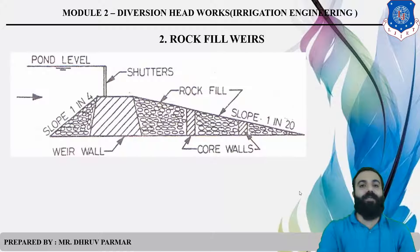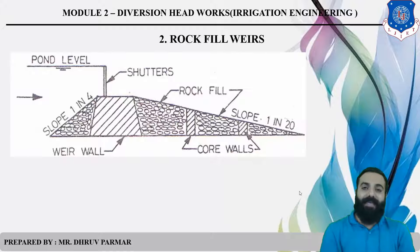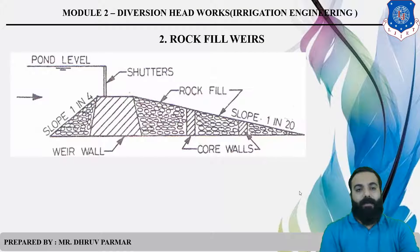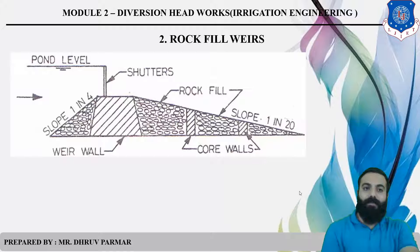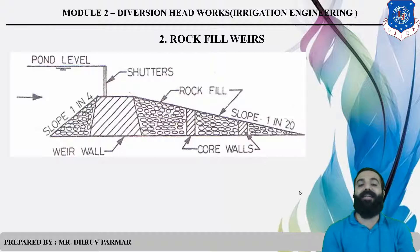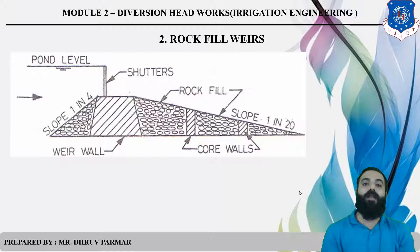The second type is Rock Fill Weir. Rock Fill Weir means that all materials used to construct this type of Weir are according to rock. We can easily see from the diagram that a large amount of rock is used. In these Weirs, the downstream length is very high compared to upstream. The upstream slope is 1 in 4, and in the downstream side it is 1 in 20. Weir walls are provided to strengthen the rock, and core walls are provided at sound distances. A shutter is provided above the Weir to increase the height.